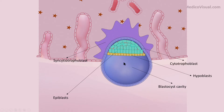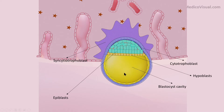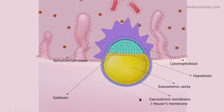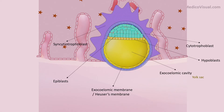The blastocyst cavity is then personalized by lining its wall with hypoblast-derived cells. This newly formed wall is called the Heuser membrane, and as it happens, the blastocyst cavity is now called the exocelomic cavity, with the Heuser membrane serving as the wall of this cavity.